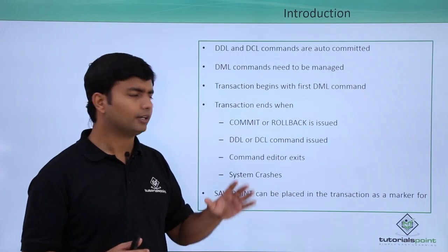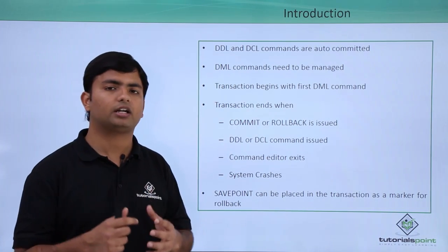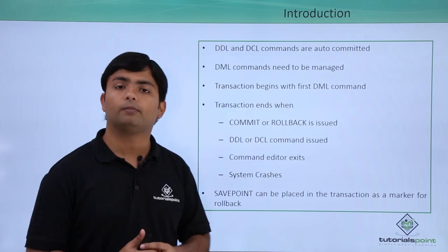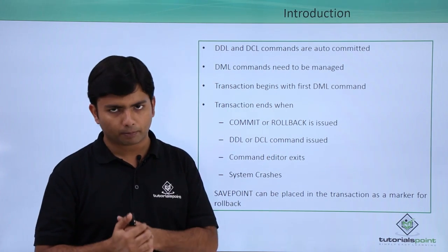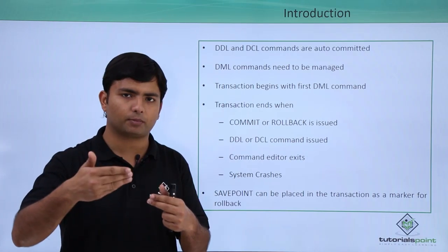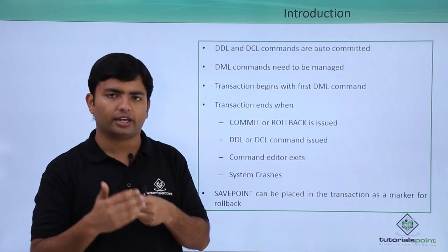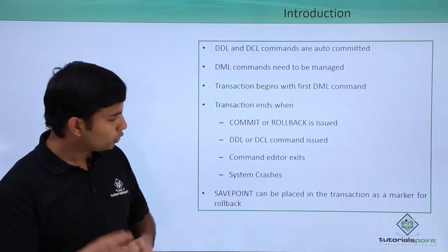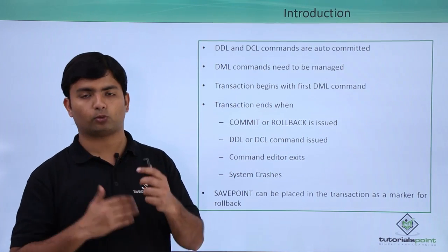Similarly, when the system crashes, it is not a consistent way to terminate, so it will undo — roll back all uncommitted DMLs. A savepoint can be placed in a transaction as a marker for rollback. Suppose there are 10 DML statements in a transaction and at a certain point you notice you want to roll back only the last three. If you just use ROLLBACK, all uncommitted transactions will be rolled back. So you can use the SAVEPOINT keyword to mark a specific level and choose up to what point to roll back.